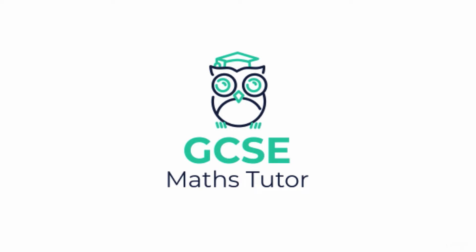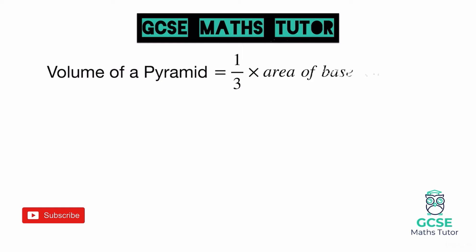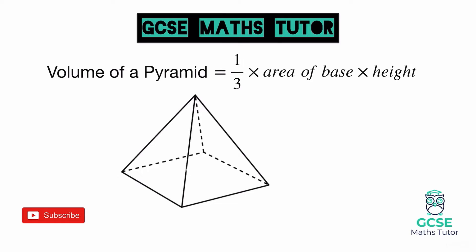I'm the GCSE math tutor, so let's have a look at our first formula. Following on from the previous video, the first formula is the volume of a pyramid. The volume of a pyramid is equal to one third times the area of the base multiplied by the height. If we look at an actual pyramid, we first need to think about the base. We'll say the lengths of the base are six and six, and we also need the perpendicular height going from the peak of the pyramid down to the very centre of the square base — we'll say that is eight.